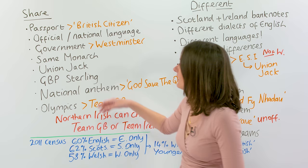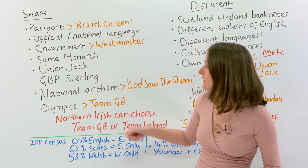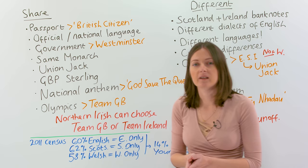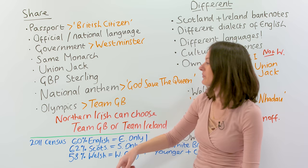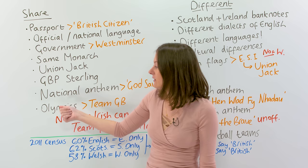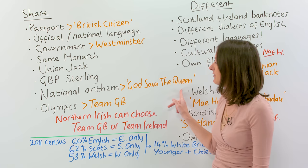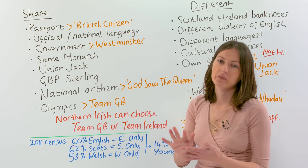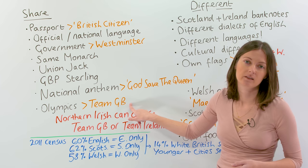We share the same monarch — at the moment that's Queen Elizabeth II. We share the same flag, which is the Union Jack flag. We use the same currency, which is the Great British pound sterling. We share the same national anthem, which is God Save the Queen. And in the Olympics, everybody in England, Scotland, Wales, or Northern Ireland can compete under Team Great Britain, if they choose.